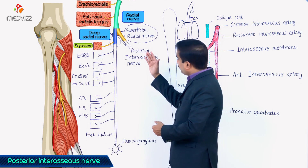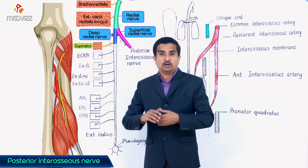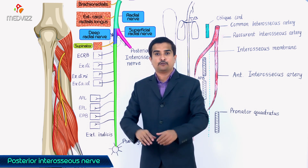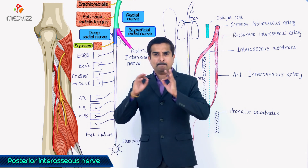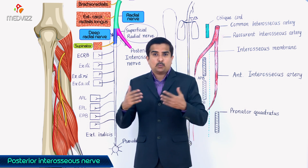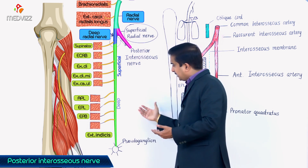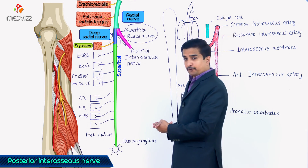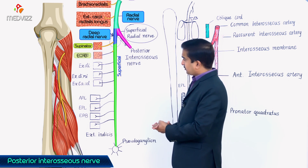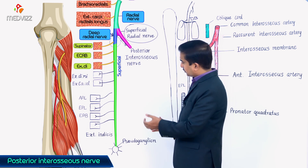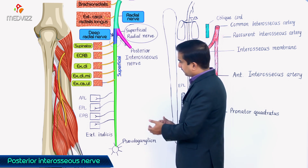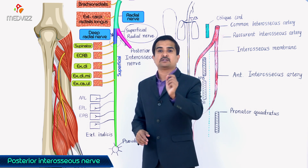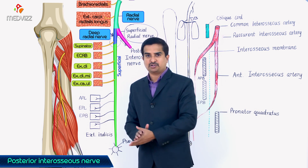The superficial branch of the radial nerve is cutaneous and gives no muscular branches. The posterior interosseous nerve is the chief nerve of the posterior compartment of the forearm because it gives innervation to the majority of the muscles — both the superficial and deep extensor groups. The superficial extensor group includes extensor carpi radialis brevis, extensor digitorum, extensor digiti minimi, and extensor carpi ulnaris — all four muscles innervated by the posterior interosseous nerve.